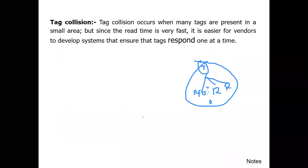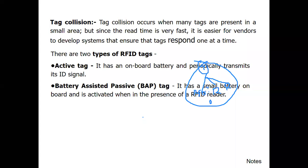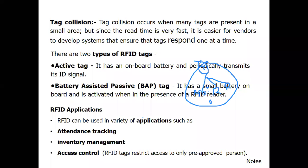Tag collision occurs when many tags are present in a small area. However, since the reader timing is very fast, it is easier for vendors to develop systems that ensure tags respond one at a time. There are two types of RFID tags.